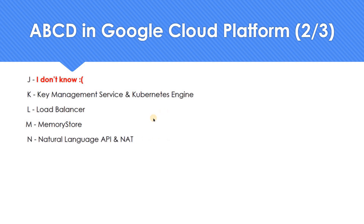Moving on to N — Natural Language API and Cloud NAT. The Natural Language API helps you identify what's in unstructured information. You give it textual content — it could be a tweet or a post — and it generates sentiment and identifies entities like names of people, organizations, and much more. Cloud NAT — Network Address Translation — if you don't want an external IP address but still want a virtual machine to get updates or connect to third-party services, Cloud NAT can play a major role.